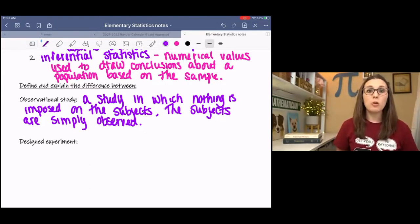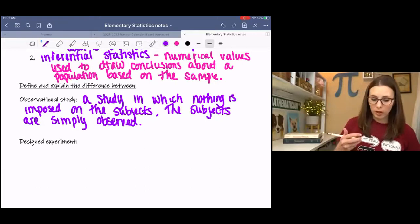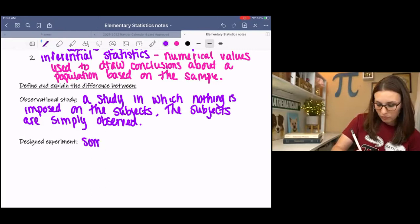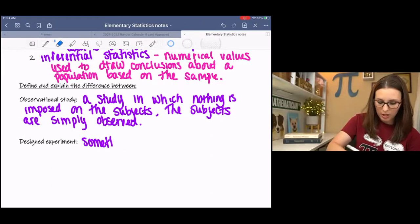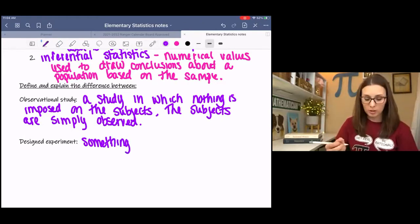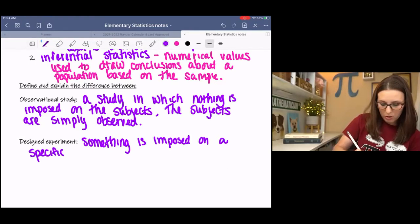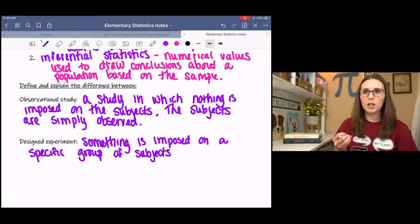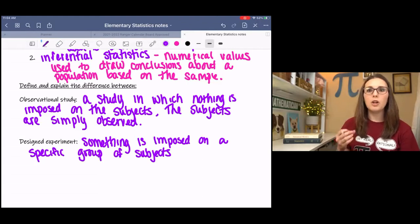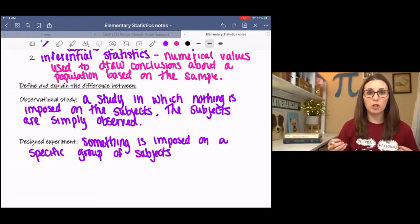A designed experiment is much more controlled. A designed experiment is where something like a, whoops, I spelled that wrong, like a drug, like an experimental drug, medical drug, is imposed on a specific group of subjects. And this is very controlled, very particular, very organized. They're much harder to come by because designed experiments are really hard to set up, basically.